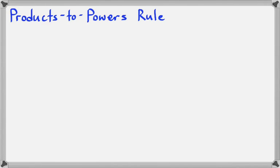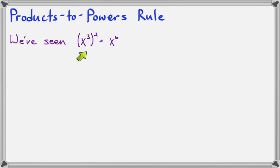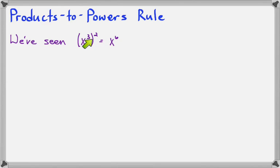In this lesson, we'll look at how to use the product's two powers rule for exponents. We've already seen how to use the power rule on a problem like x to the third squared, and we know that 3 times 2 is 6, so it's x to the sixth. We know to multiply these two exponents together.